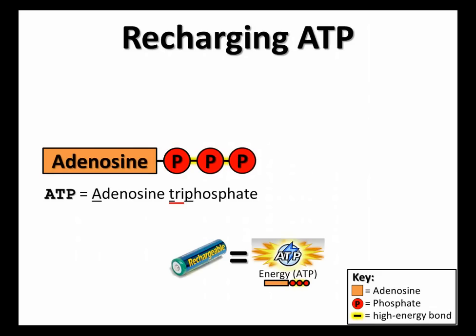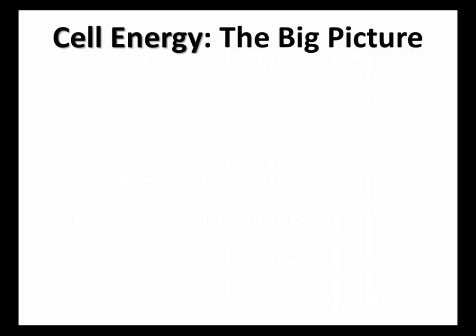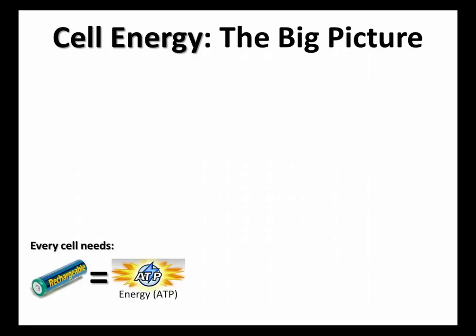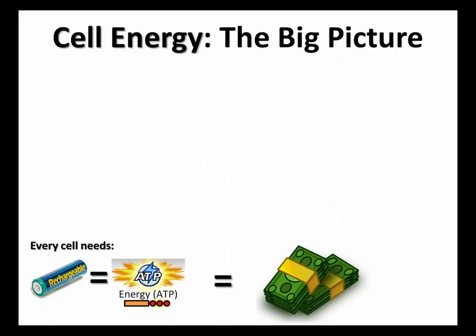ATP is the key to everything here. Every cell needs ATP — ATP is the rechargeable battery. Imagine if every single appliance in your house ran off rechargeable batteries and you ran out of them. Every cell needs ATP, that rechargeable battery. I also like to think of it as money — a cell has to spend to do anything. You can't just exist without spending money. To get it, you need to do the process of cellular respiration.